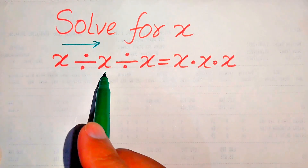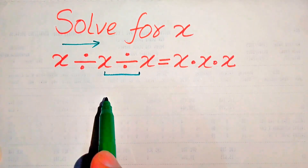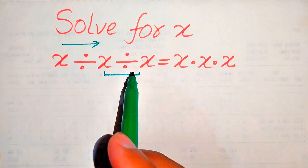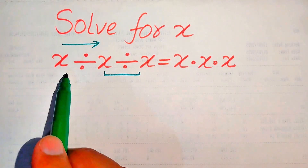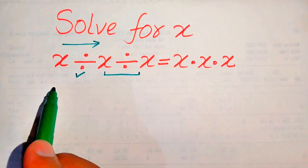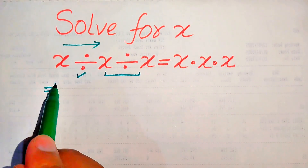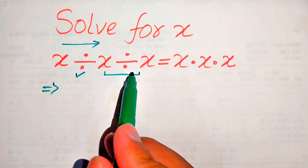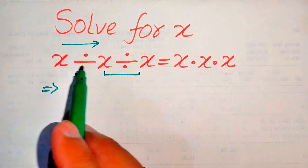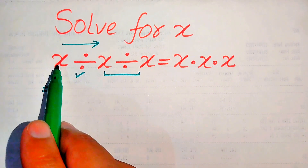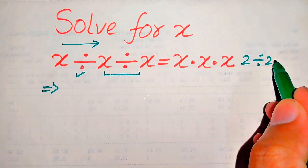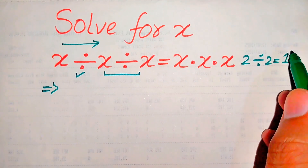If you do these divisions in the wrong order, you get the wrong answer. So we need to do the leftmost divisions first in order to get the right answer. First we need to divide these two values, and you know that when we divide two same numbers — two divided by two — it is equals to one.